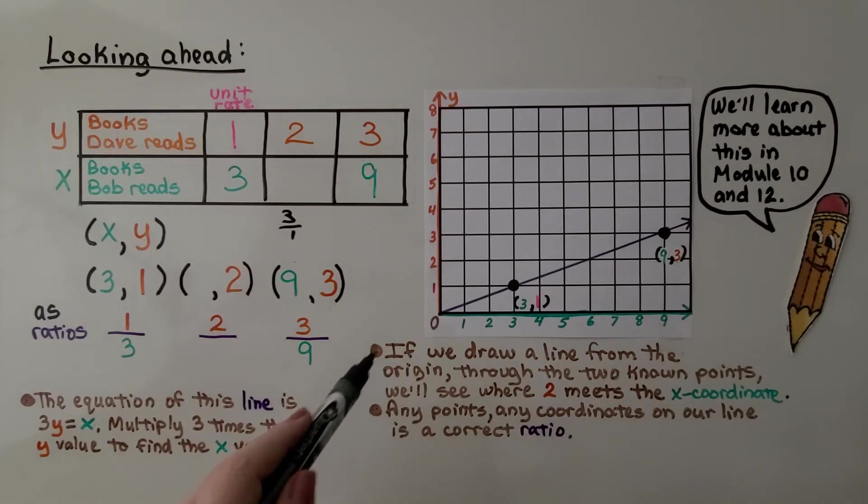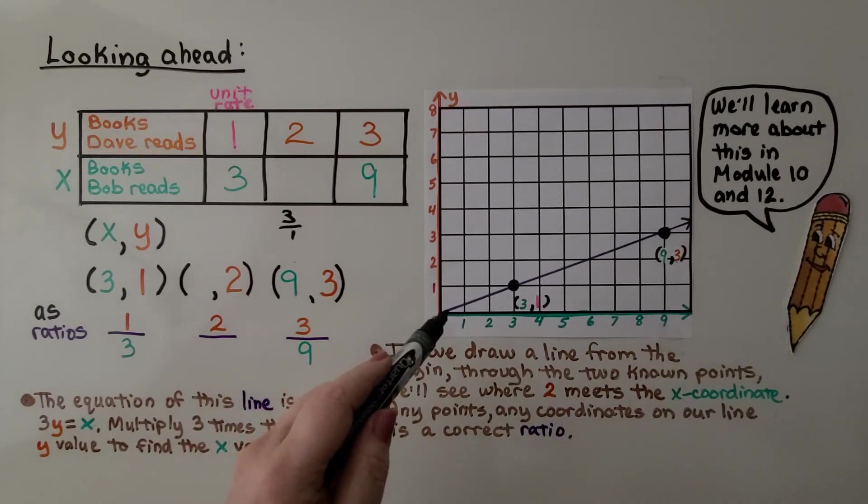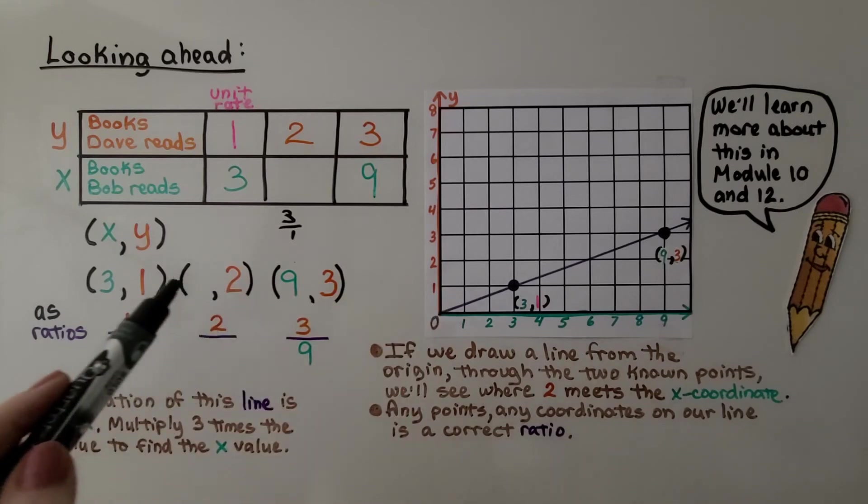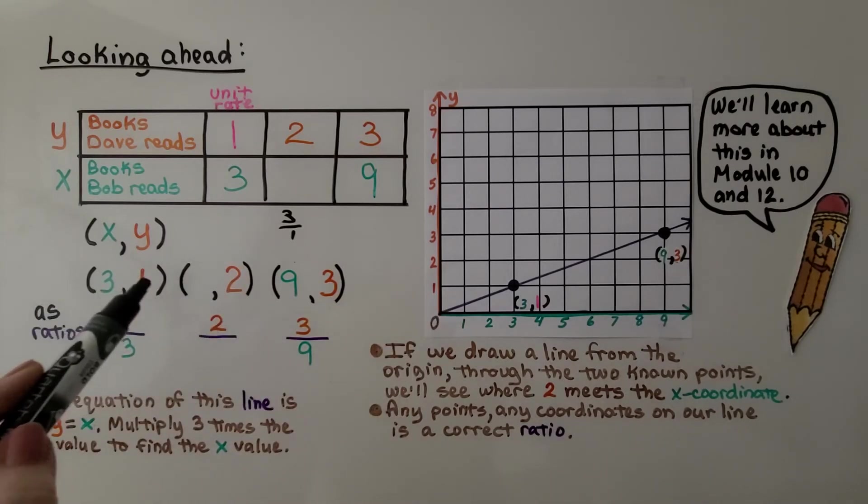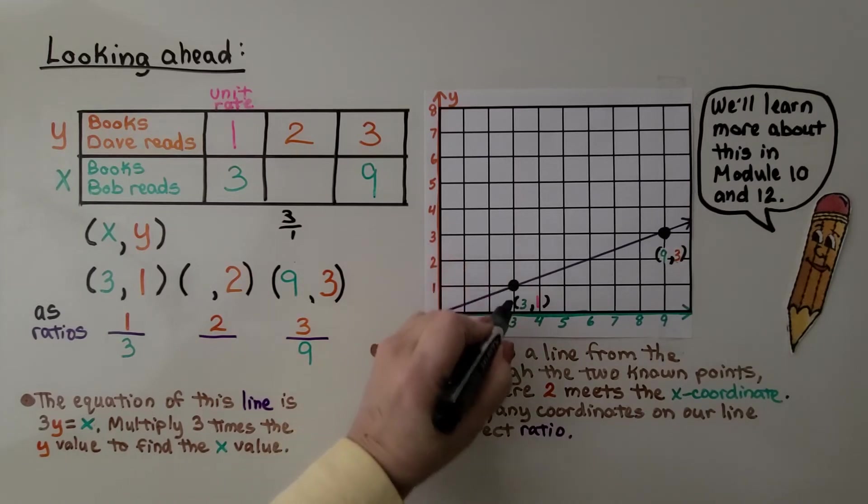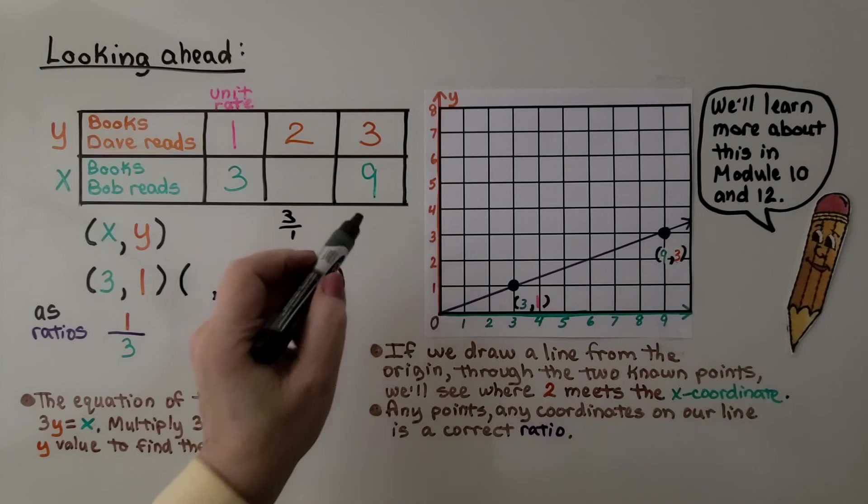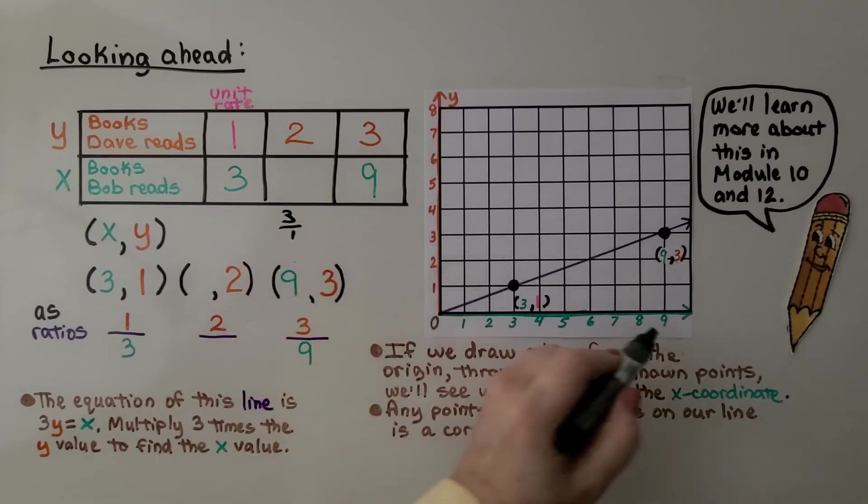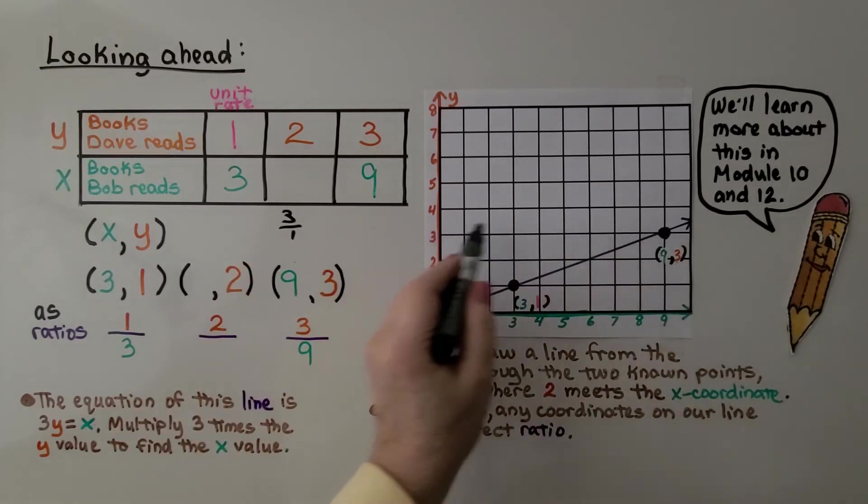And if we draw a line from the origin through the two known points, our unit rate of 3 to 1 is right here. Here's 3 and here's 1. So we know that's one point. And we had 9 and 3, 9 for x, 3 for y.